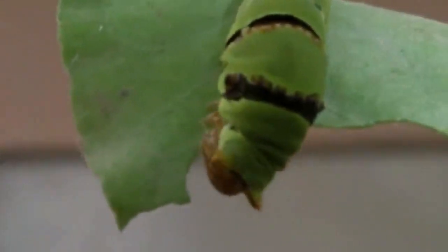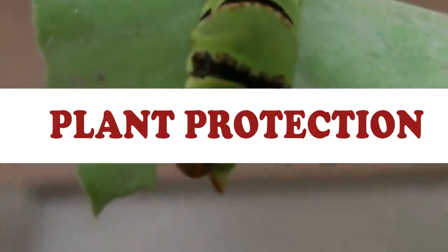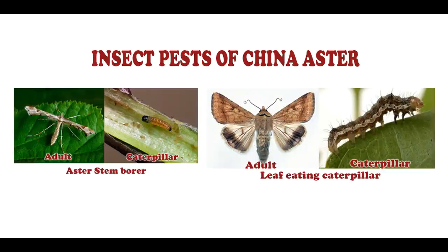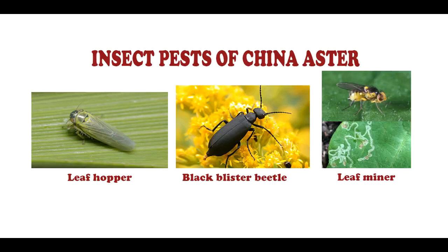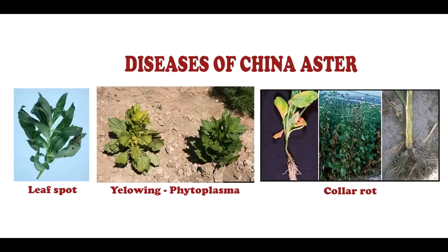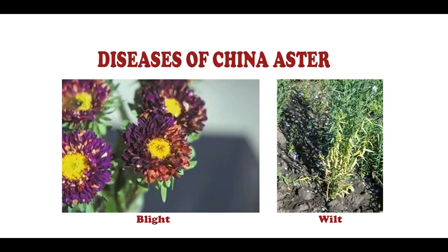Major insect pests of Aster are prismleed beetle or pumpkin beetle, Aster semilupa, Aster stem borer, leaf eating caterpillar, leaf hopper, black blister beetle, and leaf miner. Non-insect pests include red spider mite and nematodes. Major diseases of Aster are leaf spot, phytoplasmal yellowing, collar rot, blight and wilt.